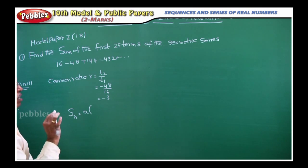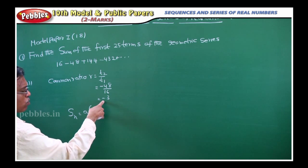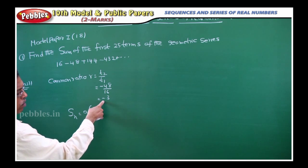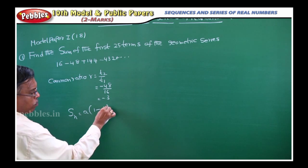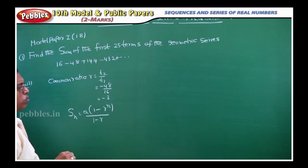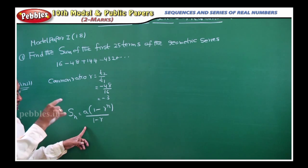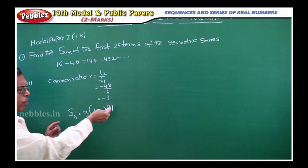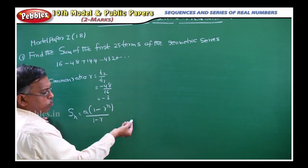Here R is less than 1, so what we will write? 1 minus R power N by 1 minus R, because it is less than 1. Suppose it is greater than 1, R power N minus 1 by R minus 1. Even you can write R is not equal to 1 also, that is up to you, ok?